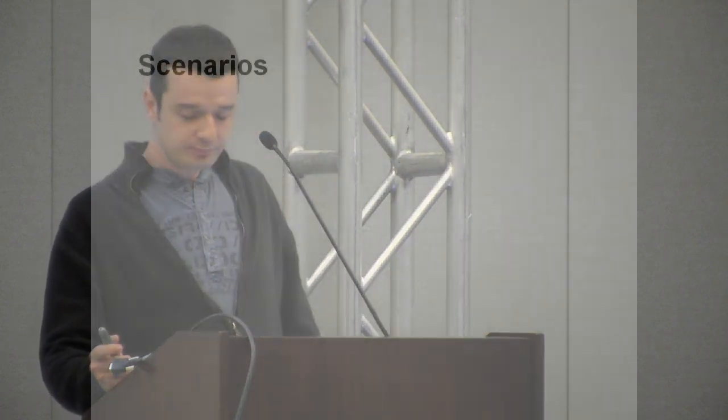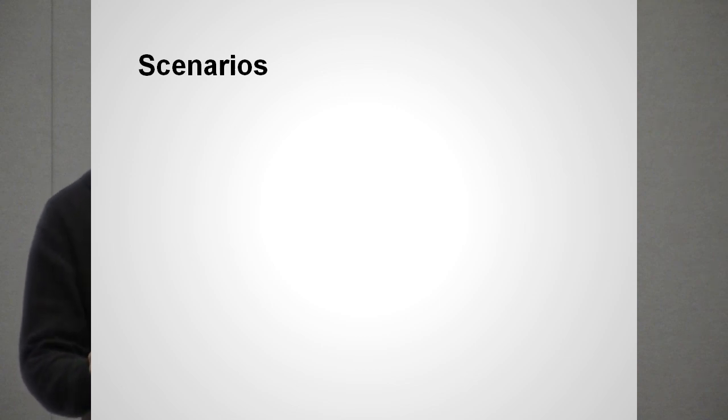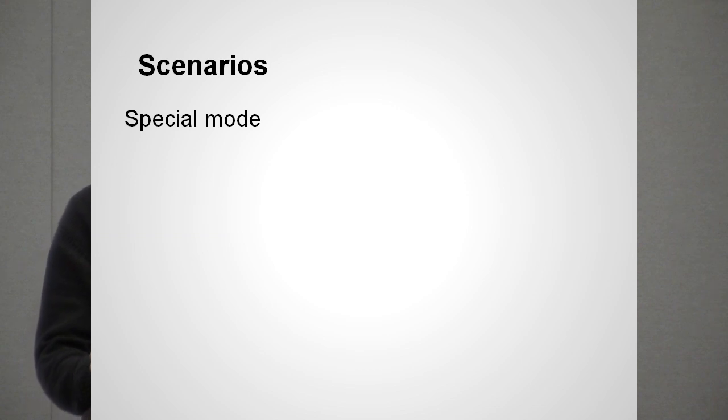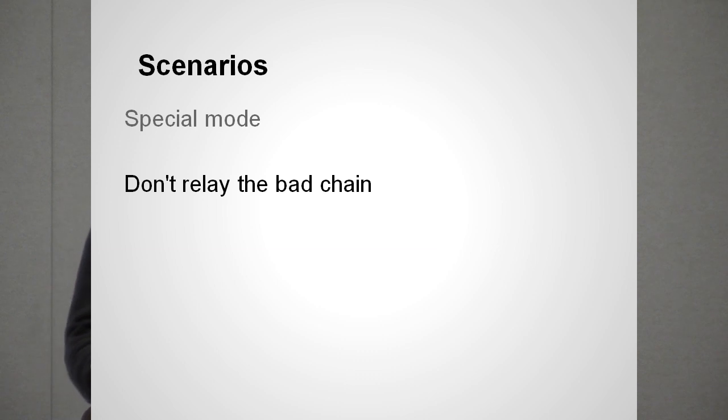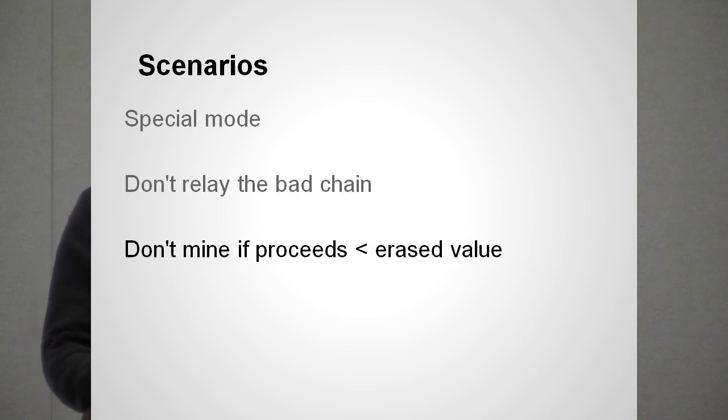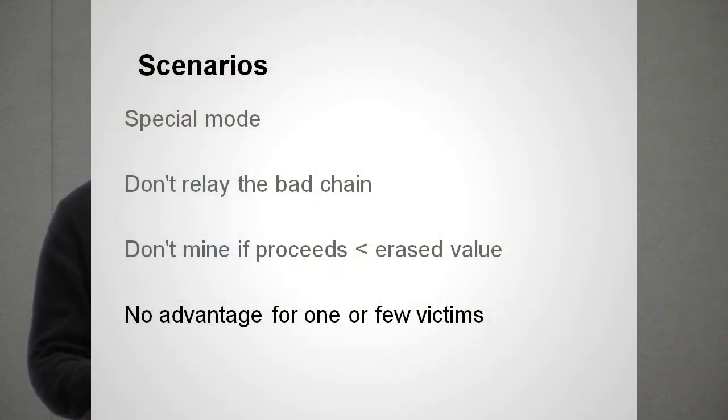How would the proposed change affect the system? Let's consider some extreme cases. Imagine that just a single merchant is attacked. The software will detect a longer chain conflicting with his subjective history and will enter a special mode. The offending chain will not be broadcasted. Extending the bad chain would be meaningless if expected proceeds from mining it are less than the erased value in the original chain. In this case, the user should be prompted if an attempt to mine on the original chain is desired instead. Unfortunately, the decision not to relay nor mine most probably won't help — the victim is already a block behind. The rest of the network will continue as usual, quickly extending the bad chain. After some hard-coded advantage threshold, for example two blocks, the user will be notified that the recovery attempt has failed. Obviously, there is no improvement for attacks against single or few participants.